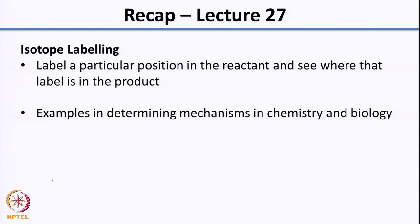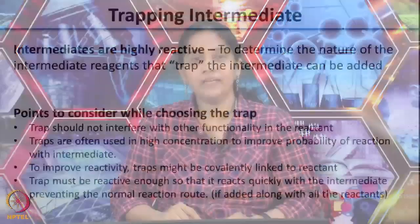Towards the end we had also looked at an example of how isotope labeling was used to determine the mechanism of a particular enzyme. And before leaving, I had just started discussing another experiment that is used to determine the mechanism, and this is trapping the intermediate.